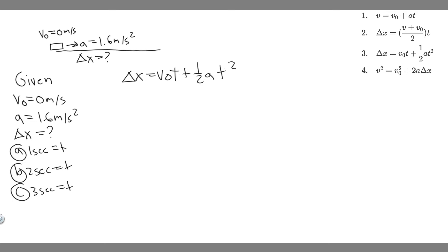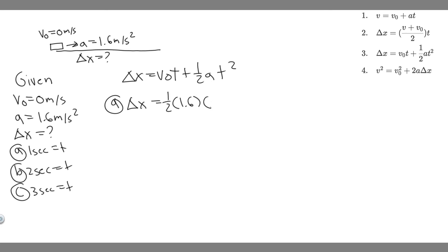All we need to do is plug in for each different time interval. Starting with A: delta x equals v-sub-0, which is 0, times t, which is 1 — so 0 times 1 is 0. That leaves one-half times the acceleration, 1.6, times t squared, which is 1 squared, which is 1. So 1 times 1.6 is 1.6, divided by 2 gives 0.8. Delta x is measured in meters, so the answer is 0.8 meters.